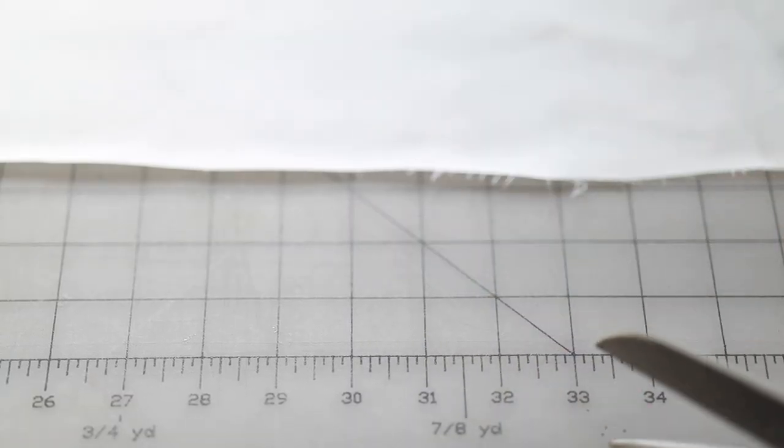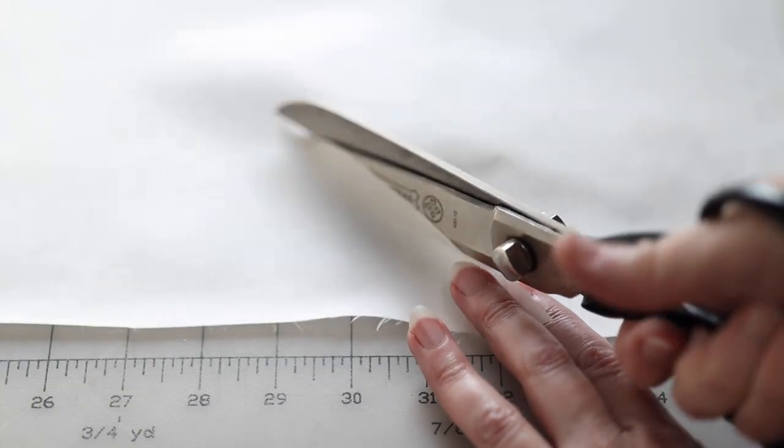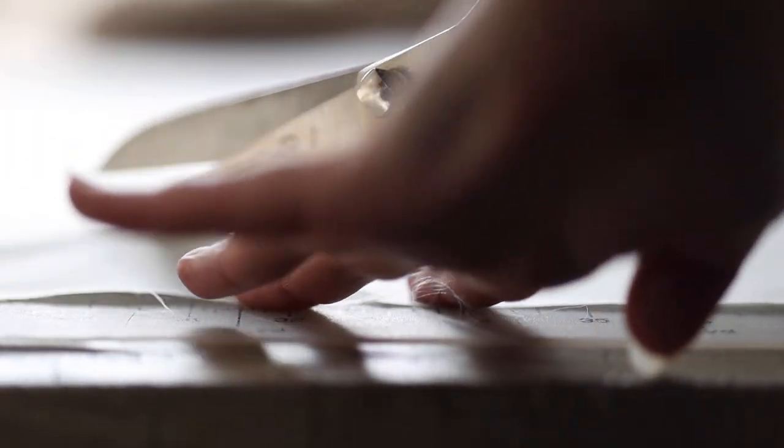Woven fabrics are said to either be on grain or on the bias. On grain fibers look like a hashtag. Bias fibers run diagonally like the lines in the letter X. They have been cut at a 45 degree angle to the selvage or sides of the woven fabric.